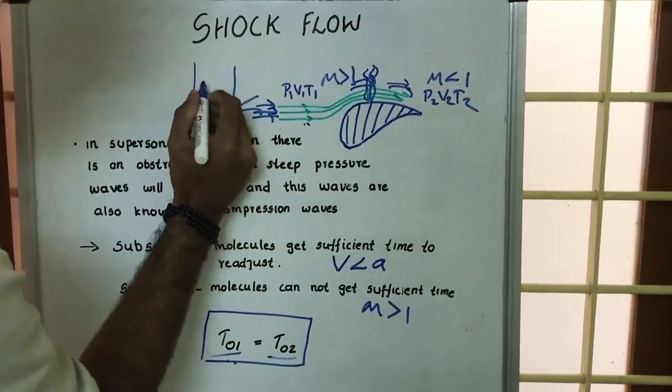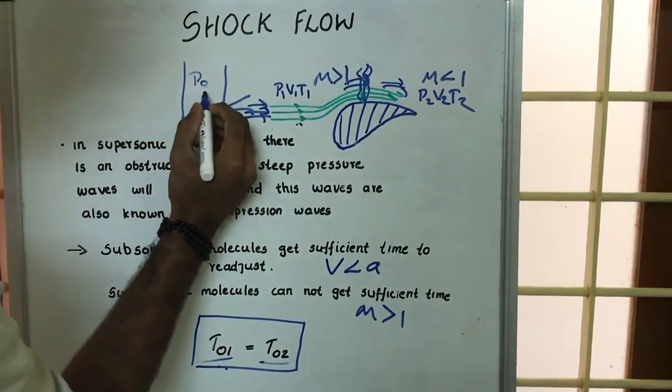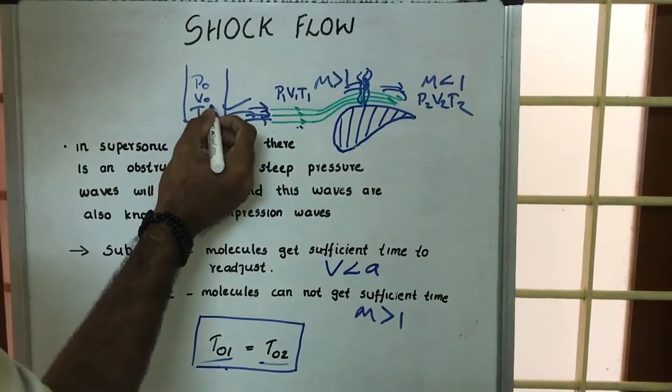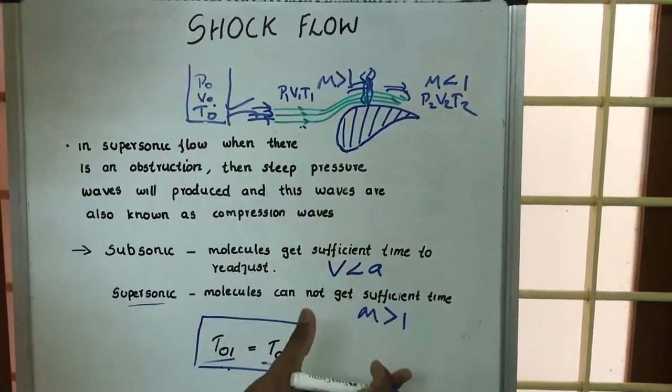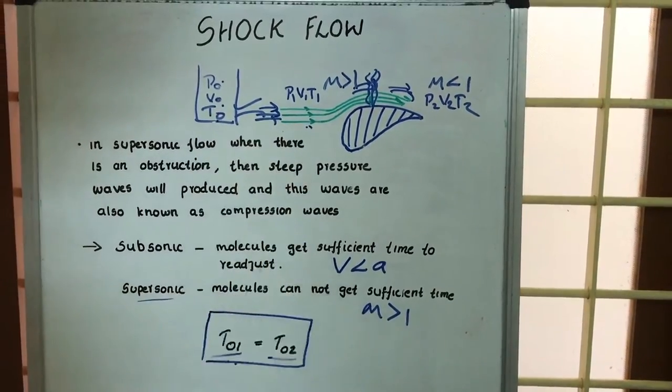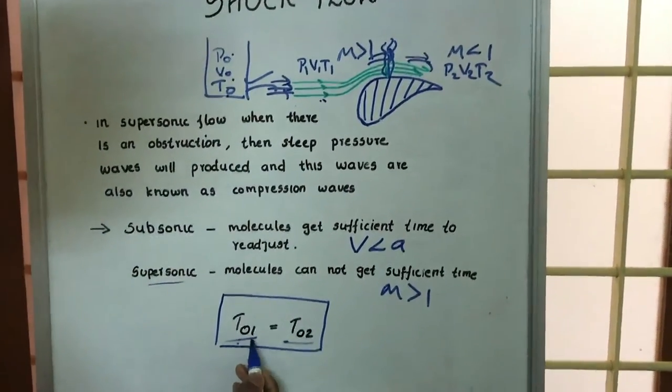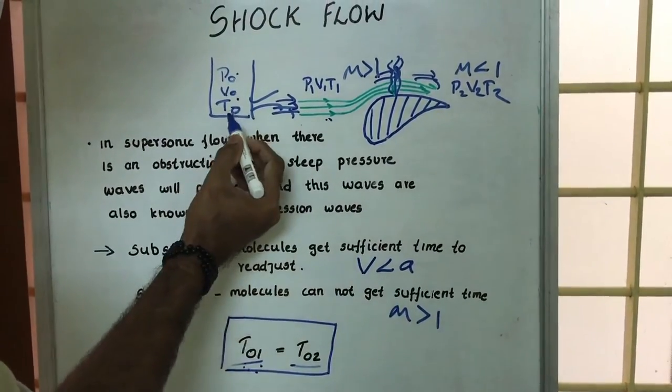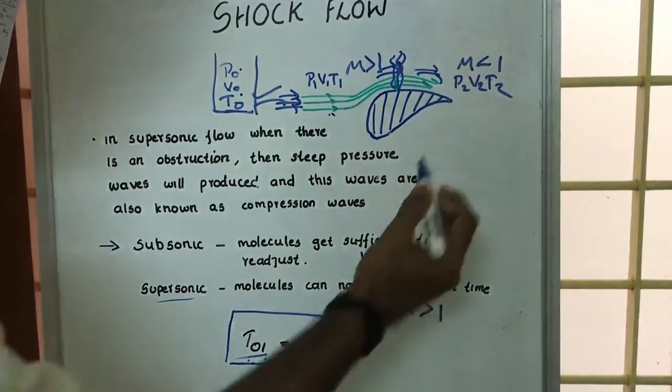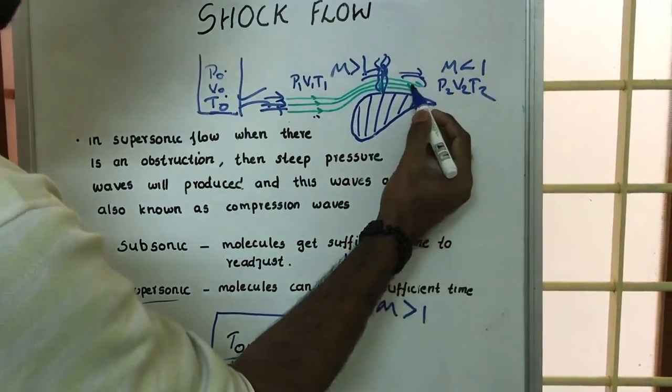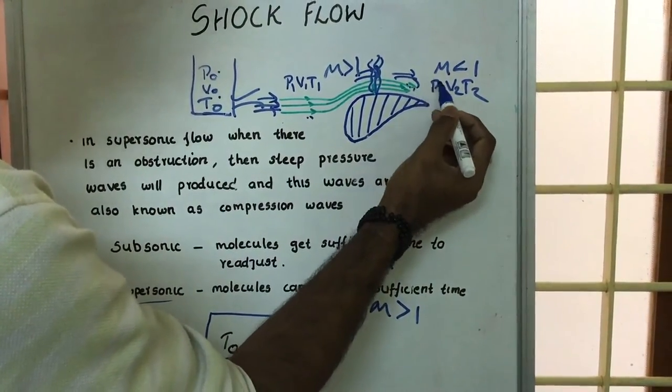T01 means that when this fluid is brought to rest from a reservoir here having pressure P0, V0, T0, the velocity is zero velocity. This P0 and T0 is given as T01, which is the initial stagnation temperature. And T02 is the final stagnation temperature.